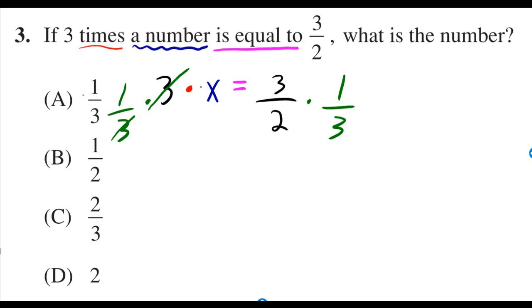That cancels out the three on this side, and you're just left with x. But then here, this three cancels with that three, and all you're left with is one half.